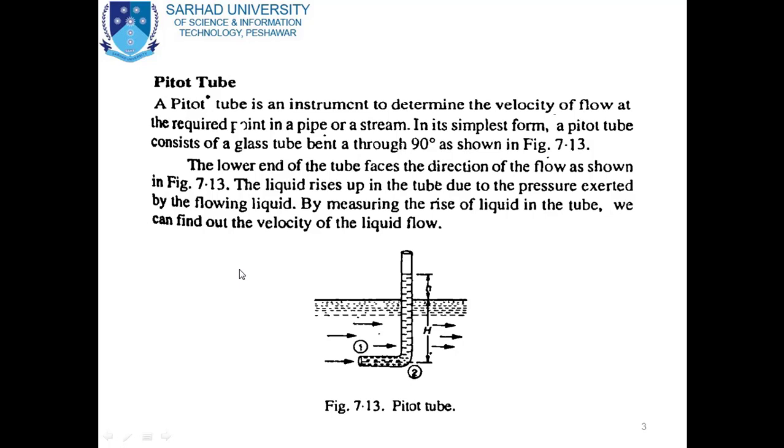The lower end of the tube faces the direction of flow. The liquid rises up in the tube due to the pressure exerted by the flowing liquid. By measuring the rise of liquid in the tube, we can find the velocity of the liquid flow.